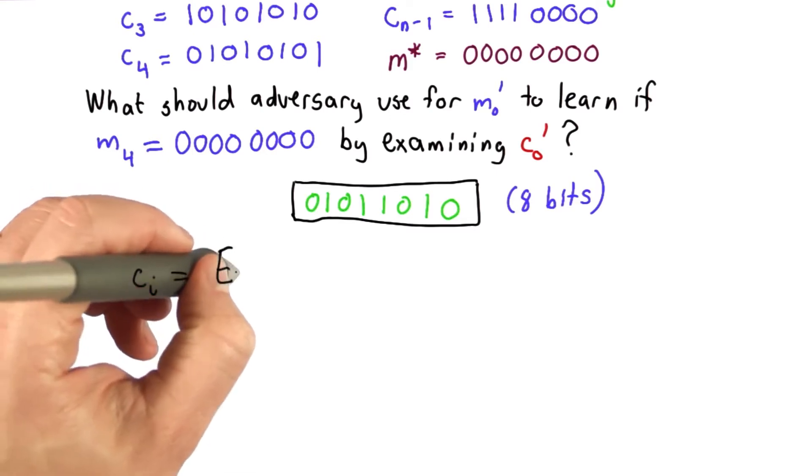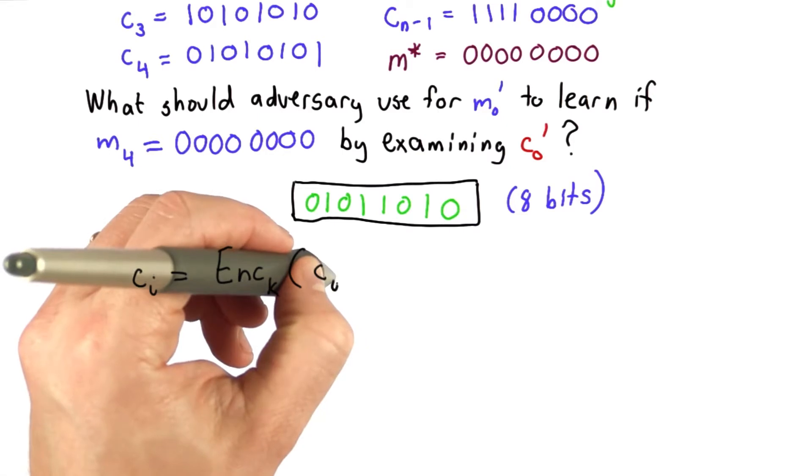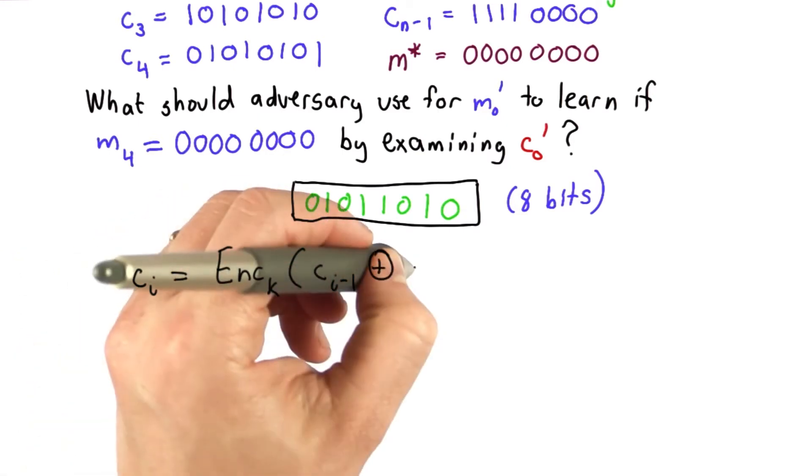The value of ciphertext block i is the result of encrypting, using the key, the value of ciphertext block i-1, xord with message block i.